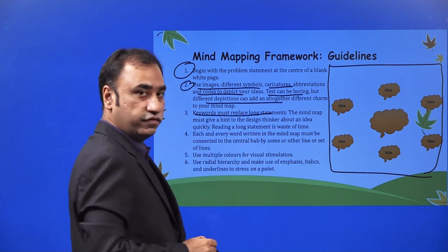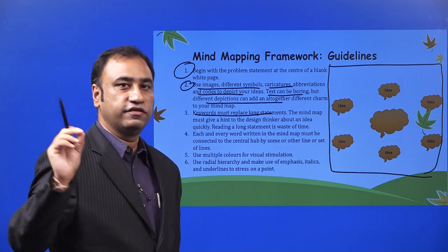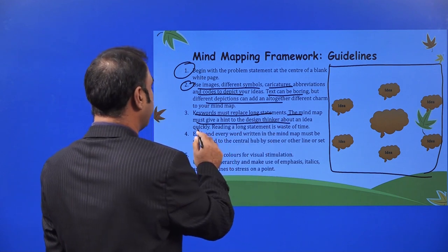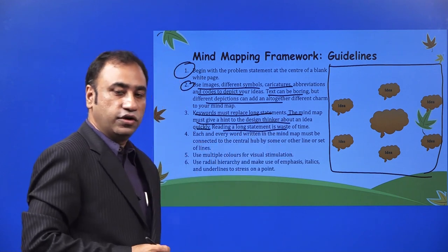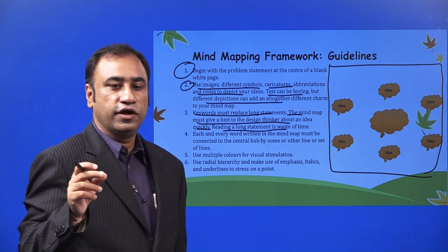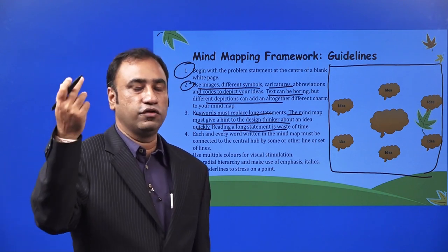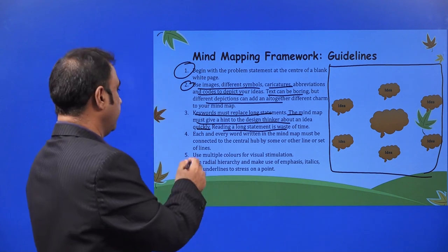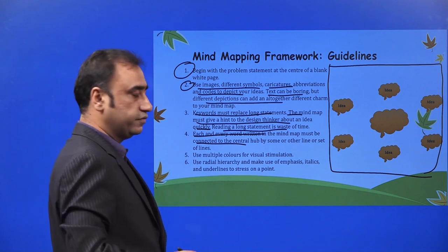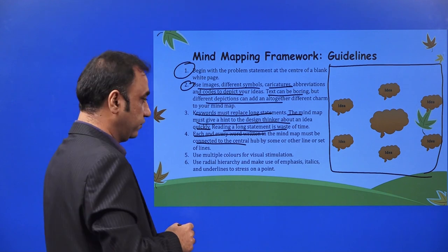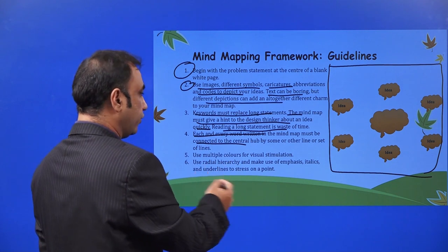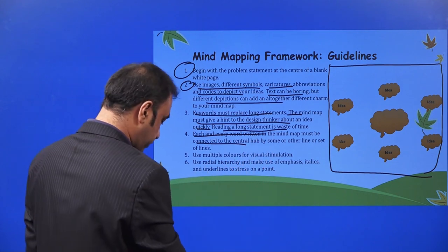Keywords must replace long statements — it has to be small keywords, not sentences. The mind map must give a hint to the design thinker about an idea quickly. Reading a long statement is a waste of time, so just write a keyword. Once you write that keyword and come back to it, the full idea will register in your mind automatically. Each word written in the mind map must be connected to the central hub by some line. Use multiple colors for visual stimulation. Use radial hierarchy and make use of emphasis, italics, underlines, bold or whatever you want to stress a point.